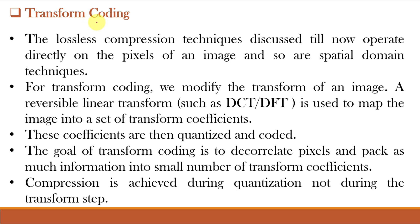In linear algebra, a matrix is unitary if its conjugate transpose is also its inverse. The lossless compression techniques we learned so far operate directly on the pixels of an image and are spatial domain techniques. Whereas for transform coding, we modify the transform of an image. A reversible linear transform such as DCT or DFT is used to map the image into a set of transform coefficients.